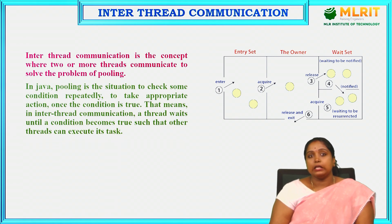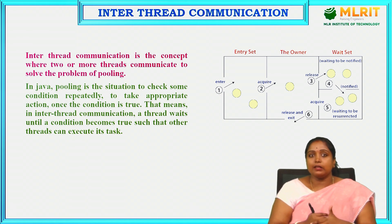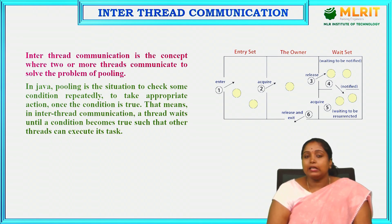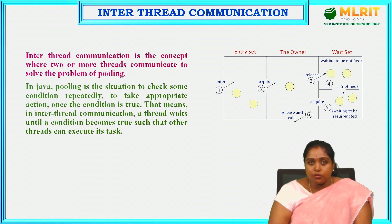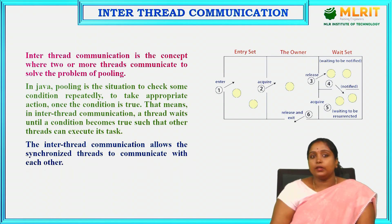What is polling? In Java, polling is a situation where you check some condition repeatedly to take appropriate action if the condition is true. Until and unless the condition is true, it will check the condition repeatedly. In inter-thread communication, a thread waits until a condition becomes true such that other threads can execute their task. It allows synchronized threads to communicate with each other.